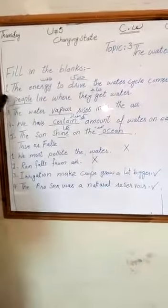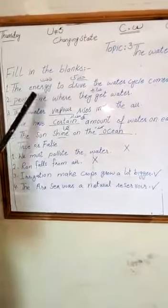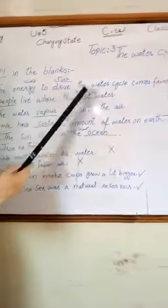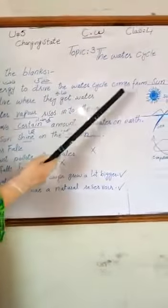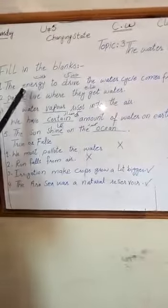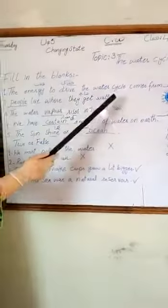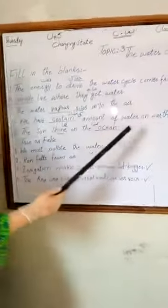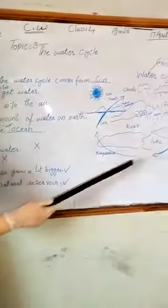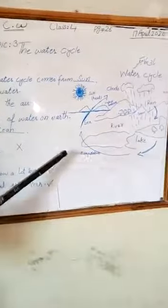First of all, we will need the names. Point number one: the energy to drive the water cycle comes from the sun. You can see in this diagram the water cycle.